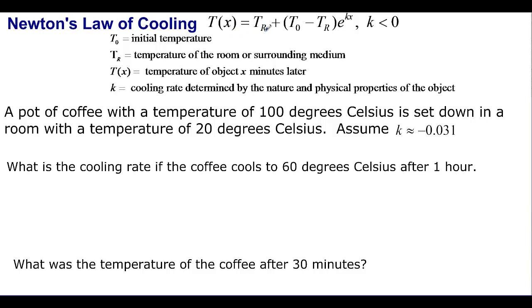And T of X is equal to T of R plus blah blah blah. T of 0 is the initial temperature of whatever we have. T of R is the temperature of the room or the surrounding medium. T of X is going to be the temperature of the object X minutes later.